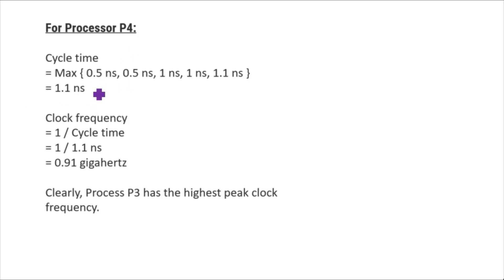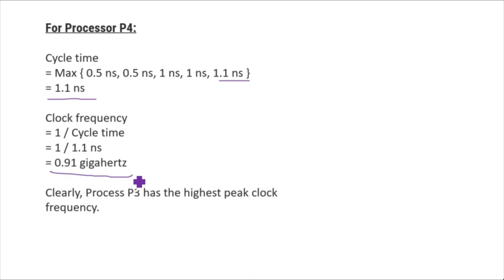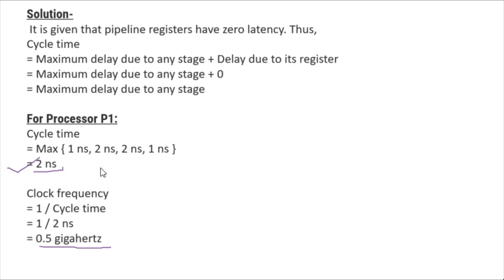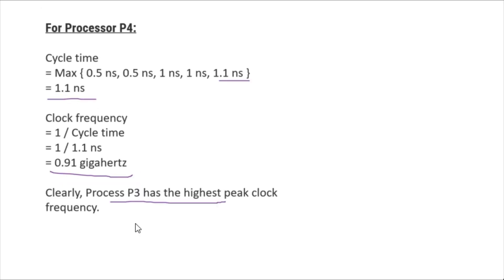For processor P4, it is a 5-stage pipeline with delays 0.5, 0.5, 1, 1, 1.1 nanoseconds. Cycle time = max = 1.1 nanoseconds. Clock frequency = 1 / 1.1 ns = 0.91 GHz. Comparing all: P1 = 0.5 GHz, P2 = 0.67 GHz, P3 = 1 GHz, P4 = 0.91 GHz. Therefore, P3 has the highest clock frequency and is the answer.